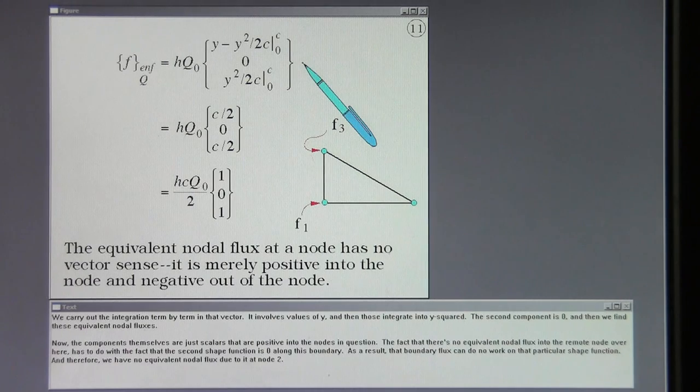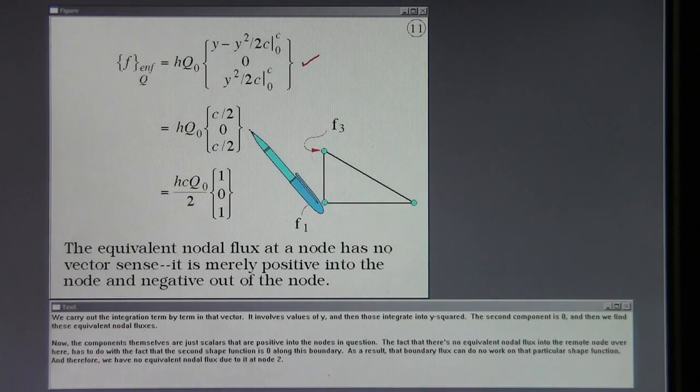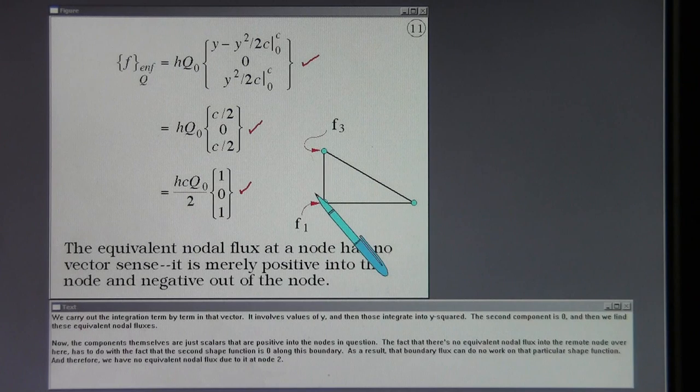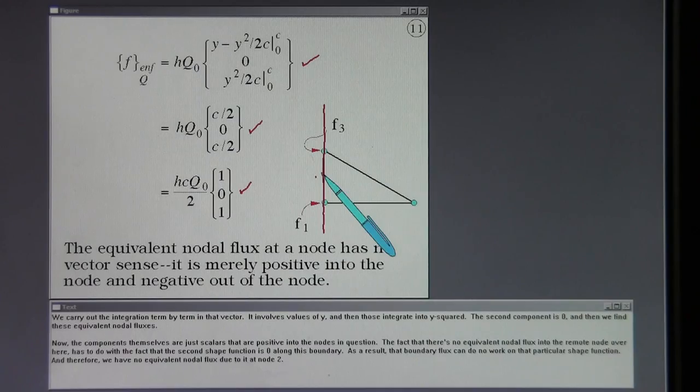We carry out the integration term by term in that vector. It involves values of y and then those integrate into y squared. The second component is 0. Then we find these equivalent nodal fluxes. The components themselves are just scalars that are positive into the nodes in question. The fact that there's no equivalent nodal flux into the remote node has to do with the fact that the second shape function is 0 along this boundary. As a result, that boundary flux can do no work on that particular shape function, and therefore we have no equivalent nodal flux due to it at node 2.